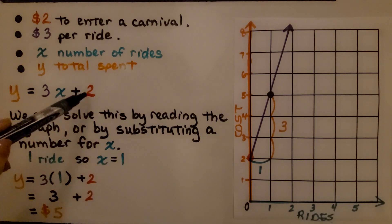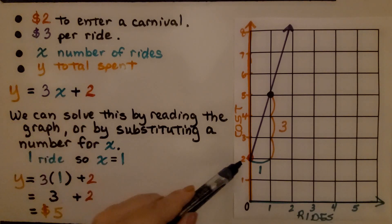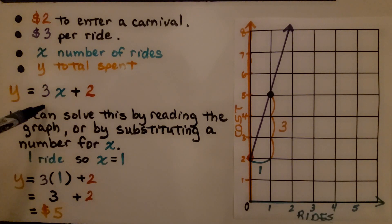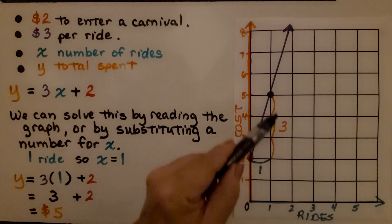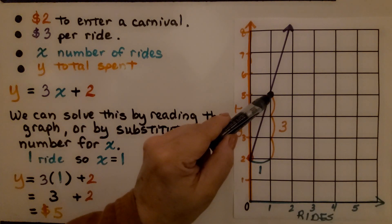If we use a graph, we know the y-intercept is 2, so we plot a point at 2. We know the rise and run is going to be 3 over 1 when we write this as a fraction. So we have a run of 1, a rise of 3. That puts us right here.